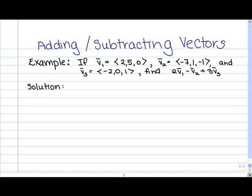Before we go ahead and take this up together, go ahead and try this on your own. In order to do this, first of all, you're going to have to multiply the vectors by the appropriate scalar. For example, you're going to have to multiply v1 by 2, and also multiply v3 by 3. To multiply a vector by a scalar, remember that you simply multiply the scalar by each component of the vector. So to find 2v1, you take each component of v1 — the 2, the 5, and the 0 — and multiply each by 2.